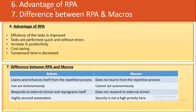Question six: what are the advantages of RPA? This is also one of the most frequently asked questions. The efficiency of tasks is improved since they are being performed by a robot. Tasks are performed quickly and without errors. Productivity increases because robots can work 24 by 7. Cost savings are achieved, and the turnaround time is decreased because robots work faster than human beings. These are the main core benefits of RPA, although there are several other advantages as well.